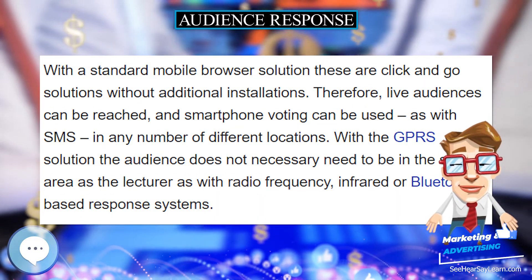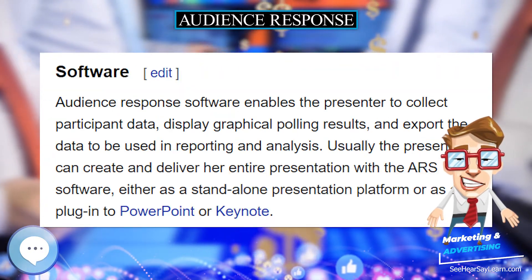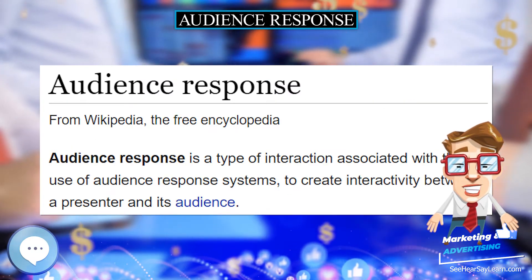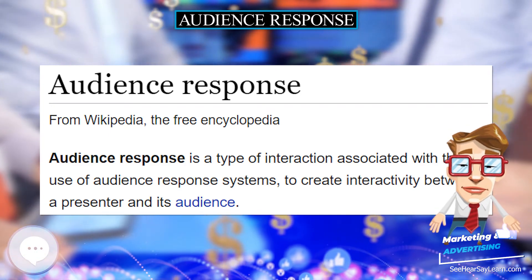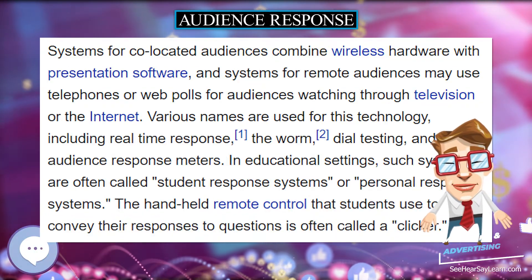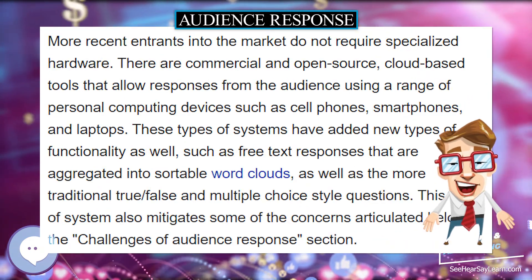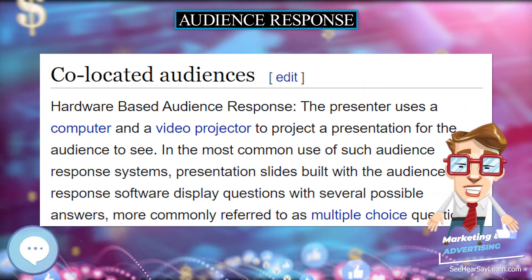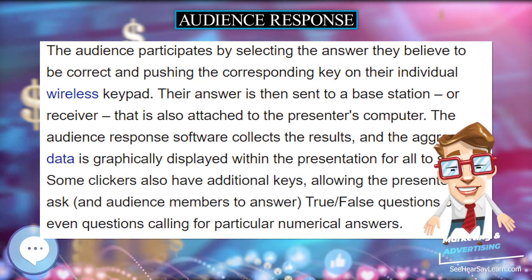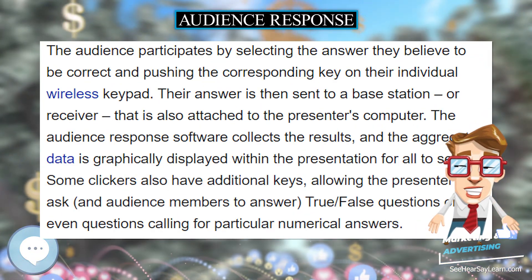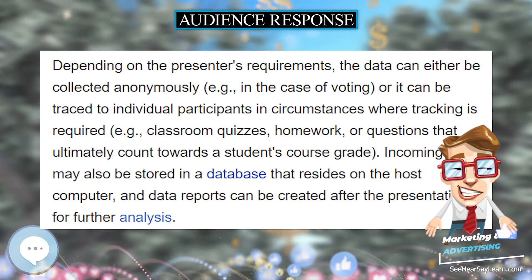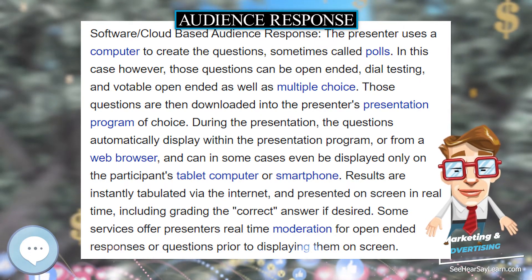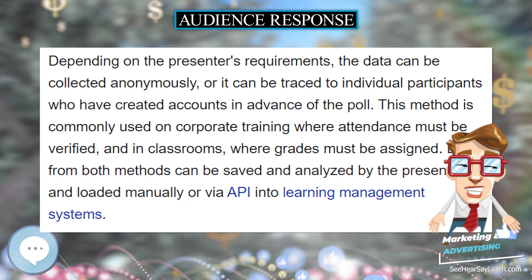Radio frequency (RF) systems are ideal for large group environments. RF systems can accommodate hundreds of voters on a single base station, and using some systems multiple base stations can be linked together to handle audiences numbering in the thousands. Because the data travels via radio frequency, the participant merely needs to be within range of the base station — 300 to 500 feet. Some advanced models can accommodate additional features such as short word answers, user login capabilities, and even multi-site polling.